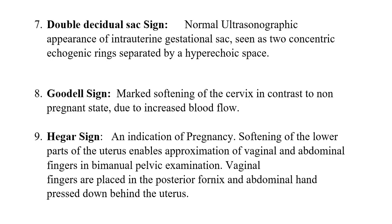Double Decidual Sac sign is the normal ultrasonographic appearance of an intrauterine gestational sac. It is important to distinguish from Double Bubble sign — if it is a Double Decidual Sac, it is normal. It is seen as two concentric echogenic rings separated by a hyperechoic space.